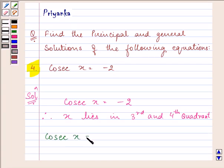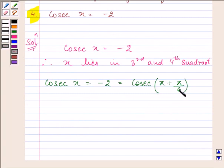Cosec x equals minus 2, which equals cosec of π plus π by 6. Since it is in the third quadrant, we'll be adding it to π to make it in the third quadrant, and it comes out to be cosec 7π by 6.